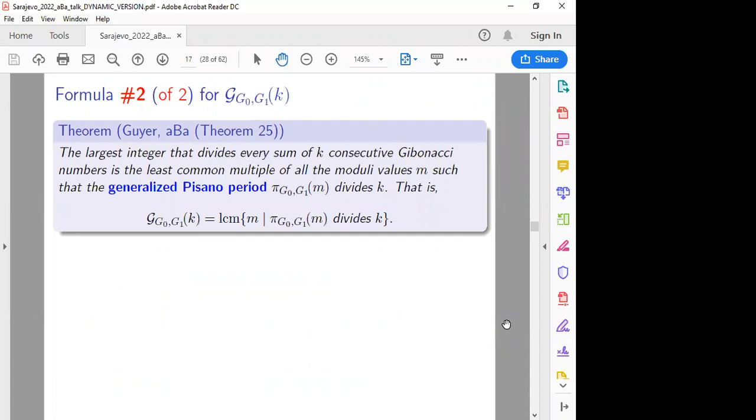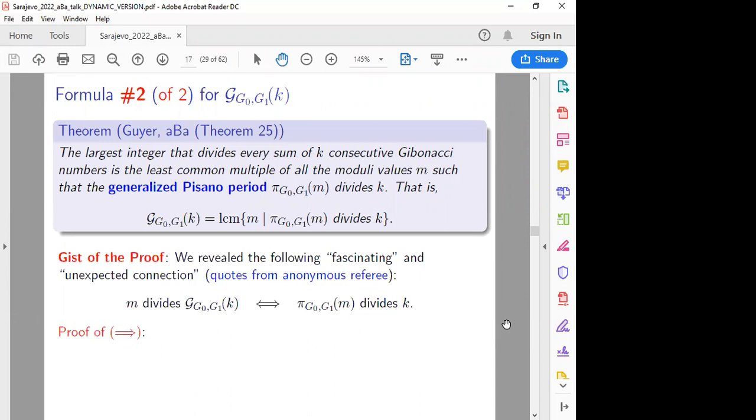Okay. So the formula number two is a little bit more obscure and really super cool. The largest integer divides every sum of K consecutive of given out to numbers is the least common multiple of all the moduli values M such that the generalized horizontal period by G1 of M divides K. So now this looks obscure because we're talking about the GCD of an independent sequence of sums and we're relating it to an LCM of moduli values of the horizontal period that divide K. I mean, that's got to look bizarre. And it is bizarre, but the gist of the group is the following fascinating and unexpected connection. These are quotes from the anonymous referee. And I think, I'm not tooting my own horn, but we think it's fascinating and unexpected. This is a really crazy bi-conditional. So M divides the GCD of the sum of K, of every sum of K consecutive of given out to numbers, if and only if the generalized basal period of M divides the value of K. So why should that be?